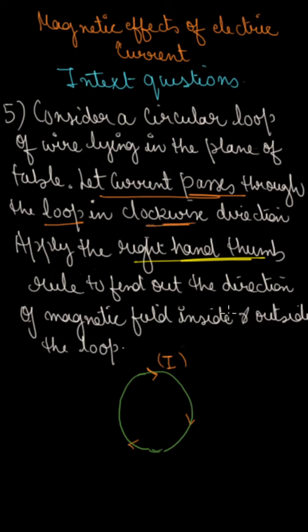So there are two regions: inside and outside the loop. When you apply the thumb rule inside the loop, you can visualize it — when you curl your fingers in the clockwise direction and put your thumb, the thumb will point downward.